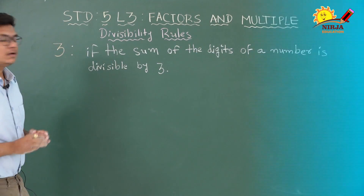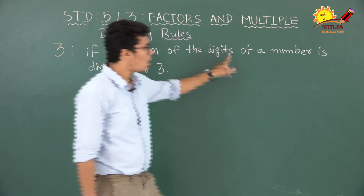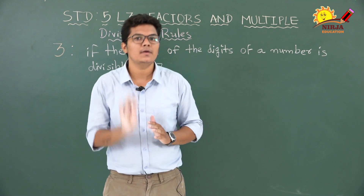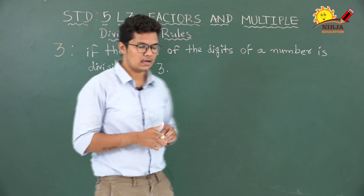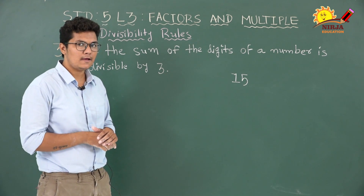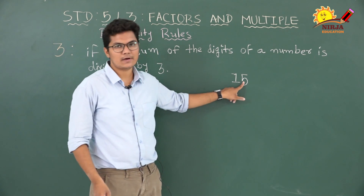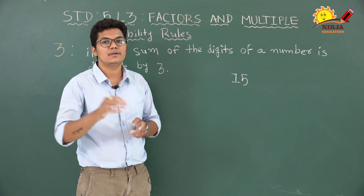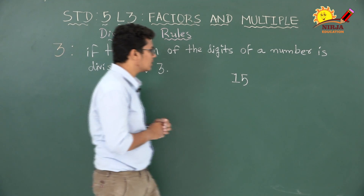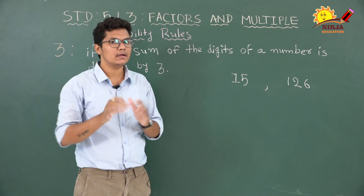Now let's learn about 3. A number is exactly divisible by 3 if the sum of the digits of the number is divisible by 3. That means if the sum of all digits of the given number is divisible by 3, then 3 can divide that number. For example, 15: can 3 divide 15? We add the digits — 1 plus 5 equals 6. Is 6 divisible by 3? Yes, 3 twos are 6. So 15 is also divisible by 3, and we know 3 fives are 15.